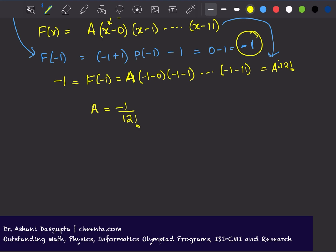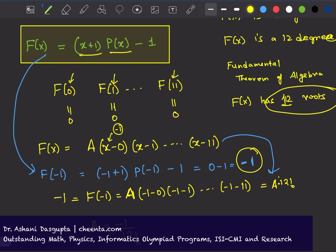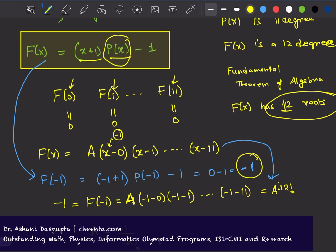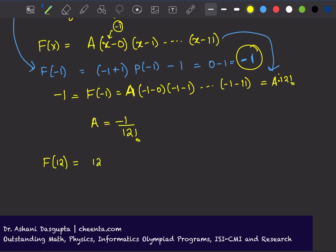Now I am ready to calculate P(12). I'll just replace x by 12. So F(x), I replace x by 12, equals (12+1) times P(12) minus 1.